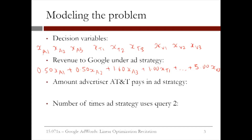To get the constraints, we use a similar process. For instance, to get how much AT&T pays, we multiply the AT&T variables by their average prices per display and add them up. So we get 0.5 XA1 plus 0.5 XA2 plus 1.6 XA3. One of our constraints is that this cannot exceed AT&T's budget, which is $170. So our model would have the constraint 0.5 XA1 plus 0.5 XA2 plus 1.6 XA3 is less than $170.